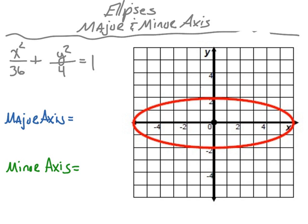Let's look at another example. The equation is x² over 36 plus y² over 4 equals 1. We're looking for the major and minor axis. The major axis runs horizontally this time. Counting the distance from one end to the other: 1, 2, 3, 4, 5, 6, 7, 8, 9, 10, 11, 12 — a distance of 12 units. Therefore, our major axis is 12.